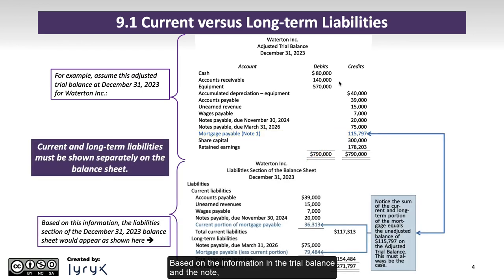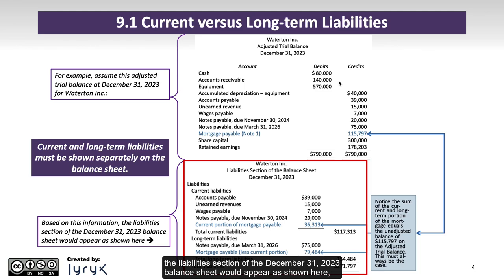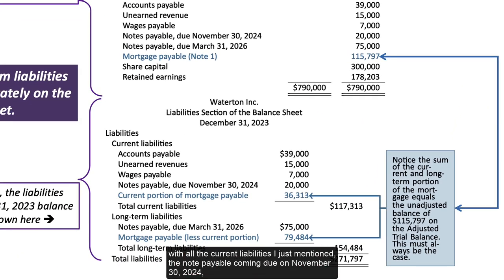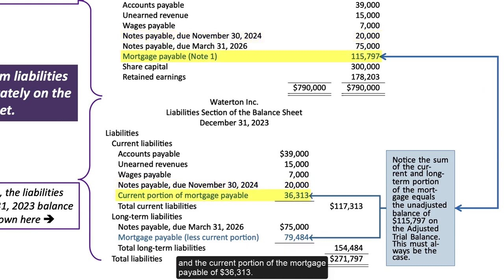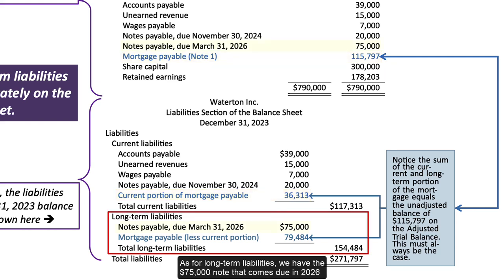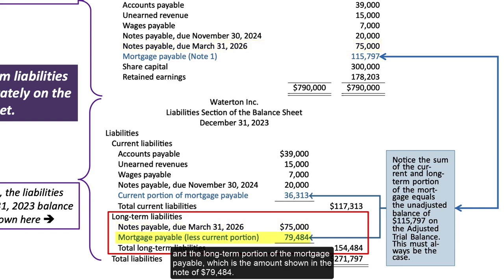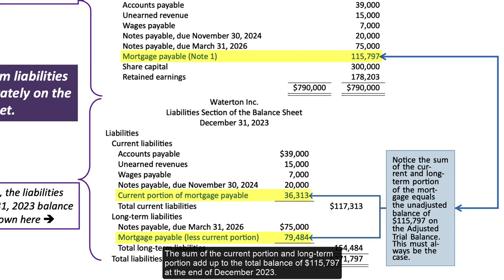Based on the information in the trial balance and the note, the liabilities section of the December 31, 2023 balance sheet would appear as shown here, with all the current liabilities just mentioned, the note payable coming due on November 30, 2024, and the current portion of the mortgage payable of $36,313. As for long-term liabilities, we have the $75,000 note due in 2026, and the long-term portion of the mortgage payable of $79,484. The sum of the current portion and long-term portion add up to the total balance of $115,797 at the end of December 2023.